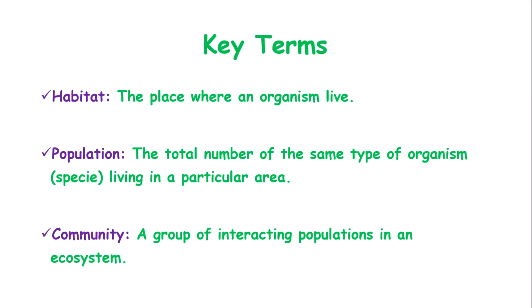Habitat is the place where organisms live. For example, rocks — certain organisms can be found on rocks. Dry barks, for example, may have certain types of worms living in them. The ocean is another habitat, and even trees are habitats for some organisms. Wherever organisms live or can be found for most of their life — that is their habitat.